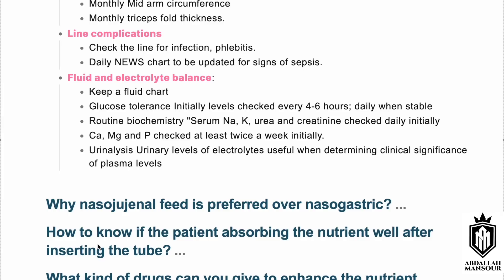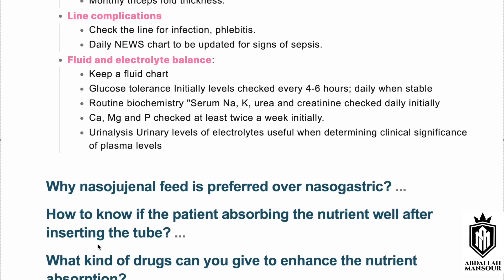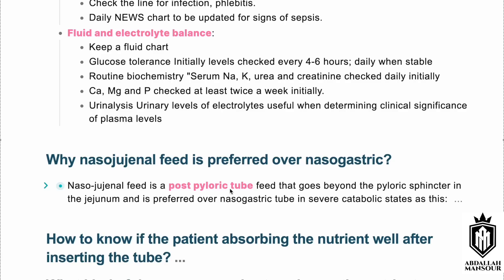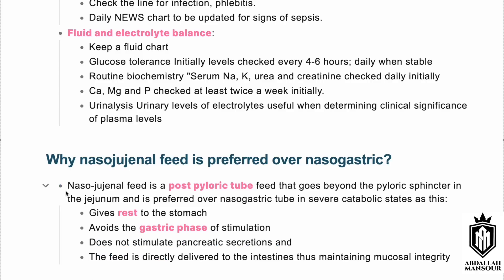Nasojejunal feed is preferred over nasogastric feed because it is post-pyloric — it bypasses the pyloric sphincter and delivers feed directly into the jejunum. This gives the stomach a rest, avoids the gastric phase, does not stimulate the pancreas, and the feed is delivered directly into the intestine, thereby maintaining mucosal integrity.